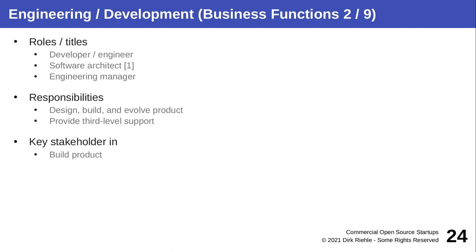Engineering is typically led by an engineering manager or VP of Engineering. They take requirements from product management and design, build, and evolve the actual product. They also sometimes provide third-level support — the highest level, where developers are the only ones who can deal with serious software bugs. There are developers and architects led by a VP of Engineering.